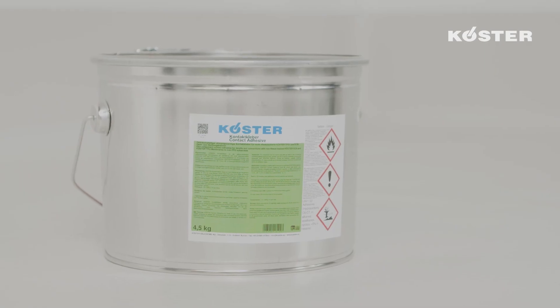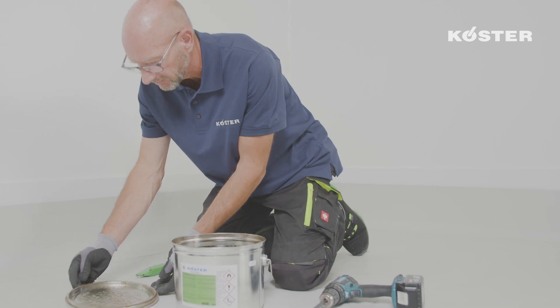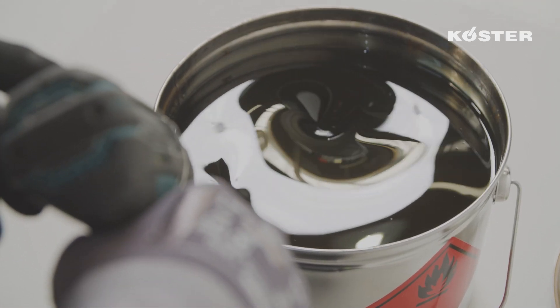The vertical roofing membrane can be bonded with Köster Contact adhesive. This prevents the membrane from warping after installation and provides a smooth appearance.